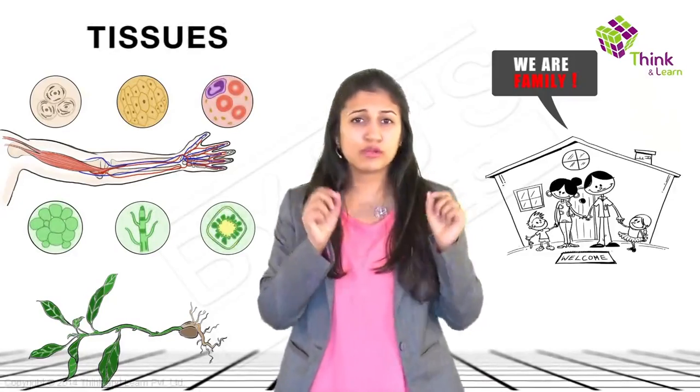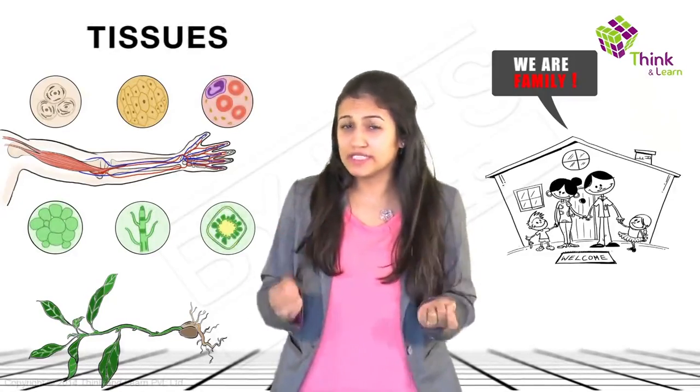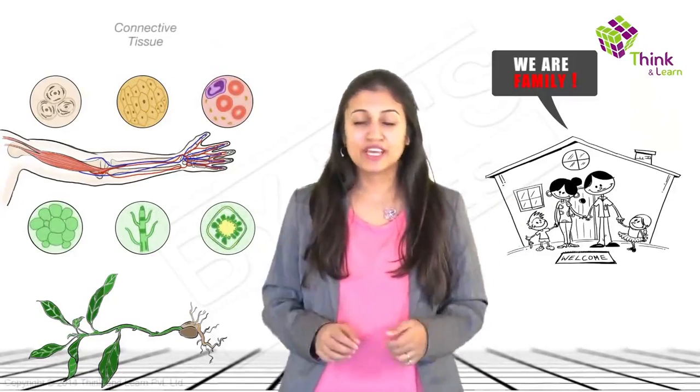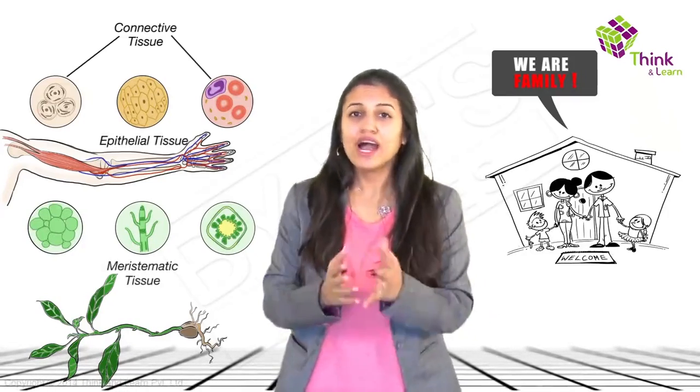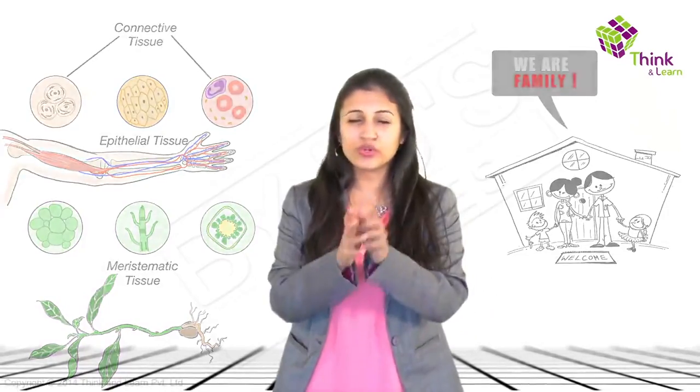Now, depending on which part of the animal body or plant that the families live, they have special names like connective tissue, epithelial tissue, meristematic tissue and so on. We'll get to them soon enough. And don't worry, we'll learn it in such a simple way that you will get a hang of all those names.